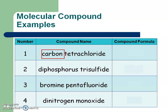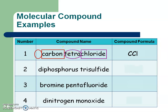For carbon tetrachloride: look up carbon on the periodic table — symbol capital C. There is no prefix on the first part, so that means one, and we don't write a one — it's understood. For the second part, chloride comes from chlorine, symbol Cl. The prefix tetra means four — like Tetris, where every shape has four blocks. So the formula is CCl4.